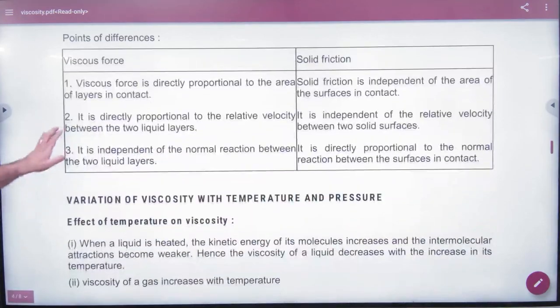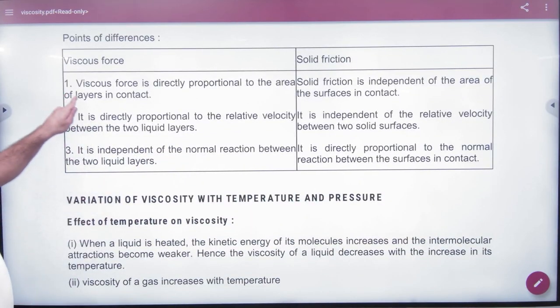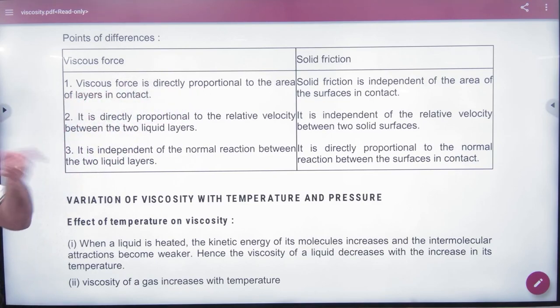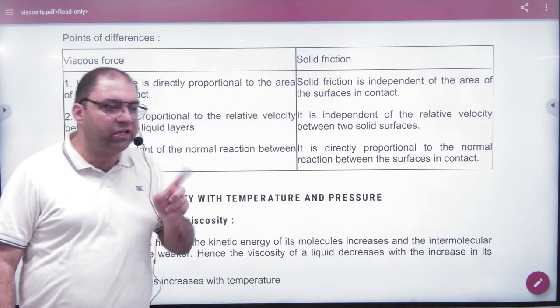If we talk about the differences - in liquid friction, viscous force is directly proportional to the area of the layer in contact. So the force is dependent on the area, but solid friction is not dependent on the area.